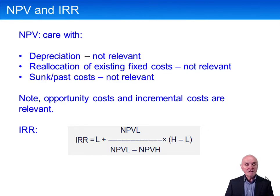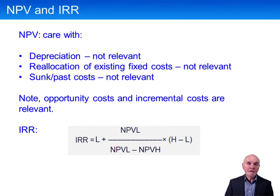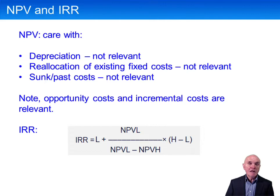Similarly, sunk costs — past costs, costs that have already been spent — they're gone, they can't be in any way controlled, they're irrelevant to the calculation. But opportunity costs, future revenue foregone because of a particular decision, are going to be relevant.